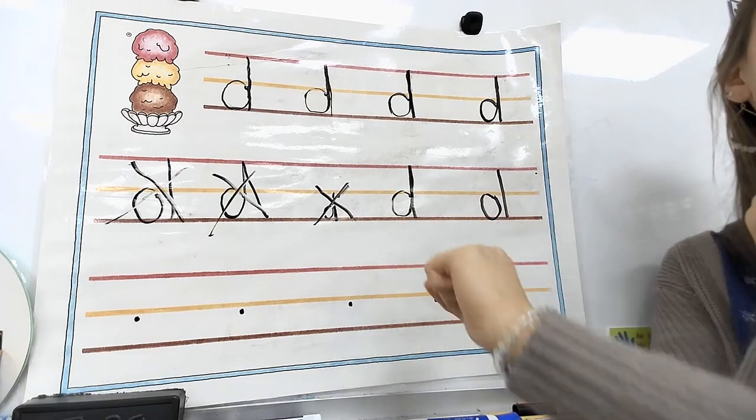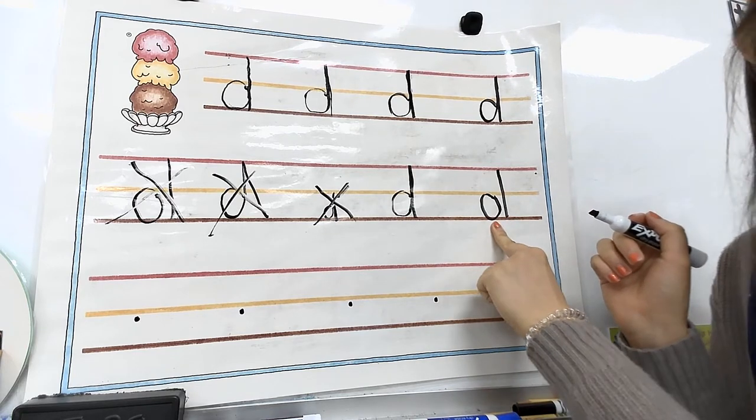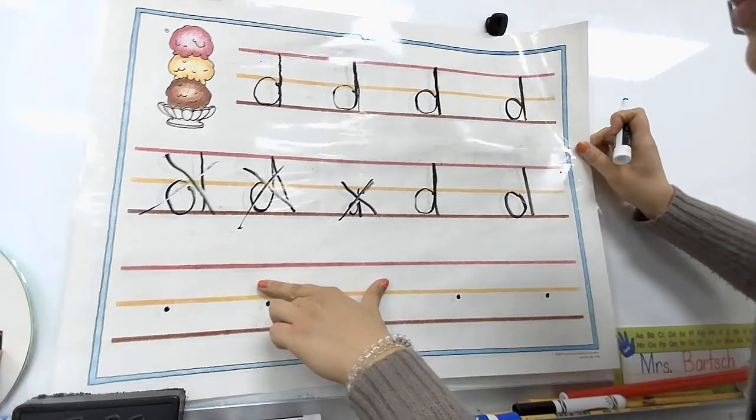Nope. That's a thumbs down, isn't it? Remember you don't have to pick up your pencil, so I shouldn't see a circle and a line separate. Yeah. Okay. One more. One more.